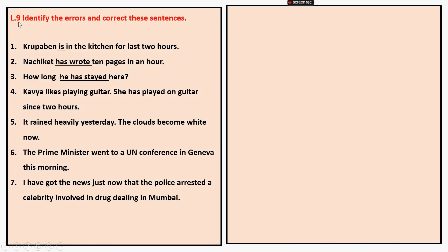Exercise number 9: identify the errors and correct the sentences. In these sentences there are errors. For example, number 1: 'Krupa is in the kitchen for last 2 hours.' — for last 2 hours needs to be corrected.